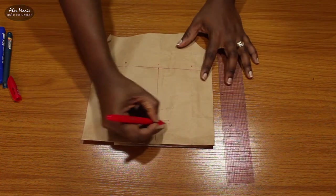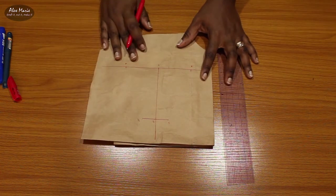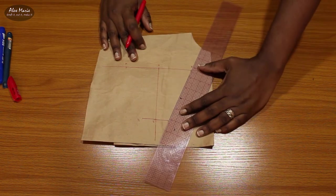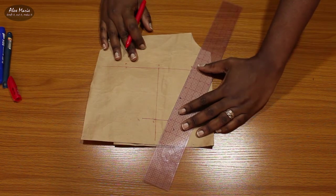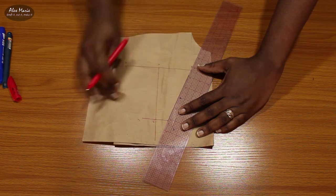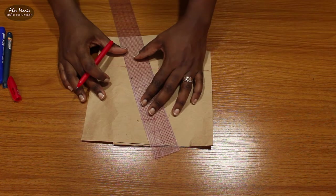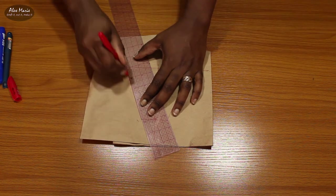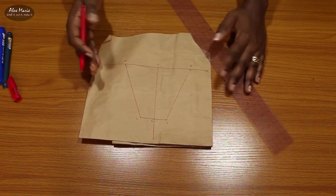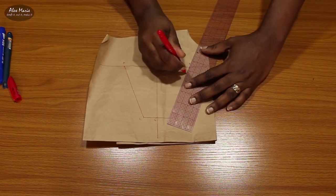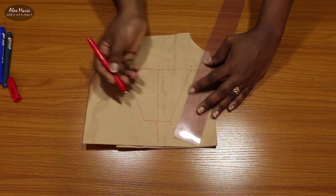We can call that point E and point F. Next you want to just join these two lines, join A to E and B to F. And we have our general shape, we have the general shape. Now we need to shape it and curve it.